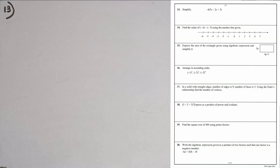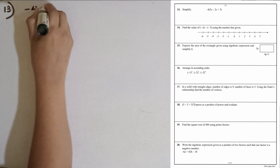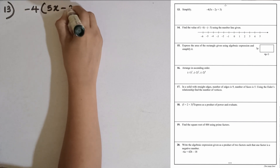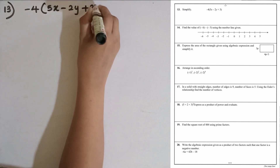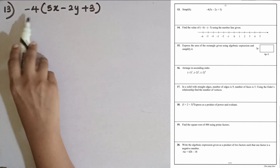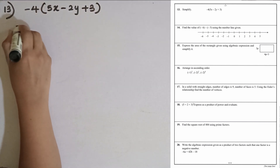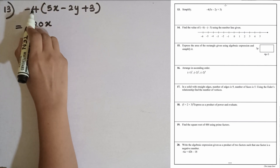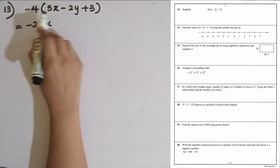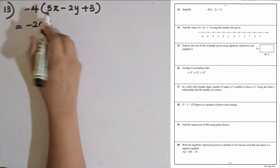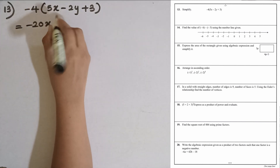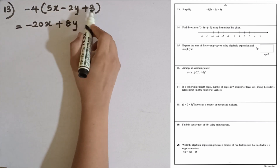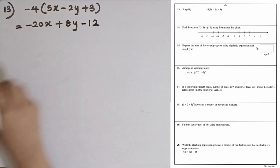Question number 13. Simplify minus 4 times (5x minus 2y plus 3) by removing the bracket. Minus 4 times 5x equals minus 20x. Then minus 4 times minus 2y: minus times minus becomes positive, so plus 8y. Then minus 4 times plus 3 equals minus 12. The answer is minus 20x plus 8y minus 12.